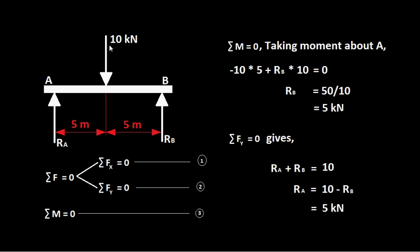Next, for the 10 kilo Newton force: extend its line of action, draw a parallel line through the moment center A, and find the perpendicular distance — which is 5 meters. Because 10 kilo Newton acts downwards, it tends to rotate the body clockwise. By convention, clockwise moments are negative, so this contributes minus 10 into 5 to the moment equation.